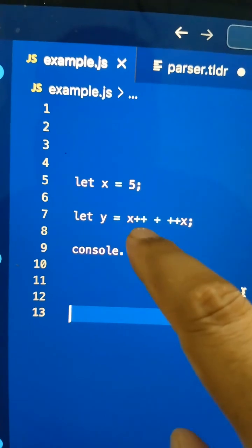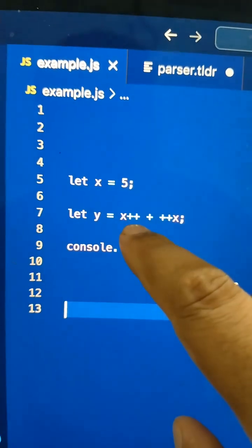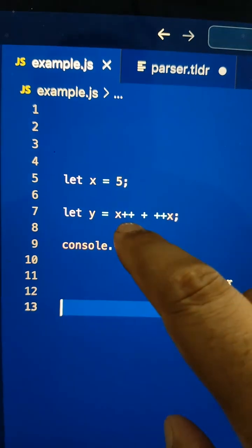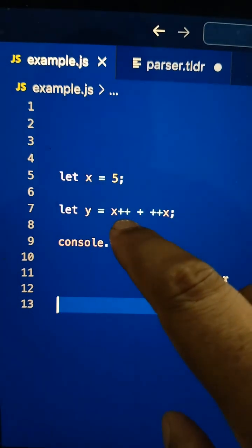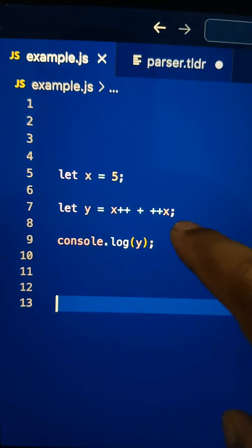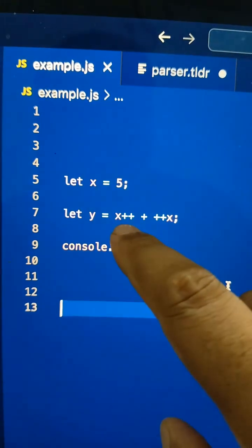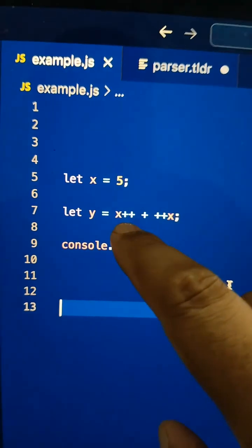Post-increment does two things: first it returns the current value of x, second it increments by 1. So in this addition operation, we can imagine the left-hand operand is x++ and the right-hand operand is ++x, at the center we have the plus operator.